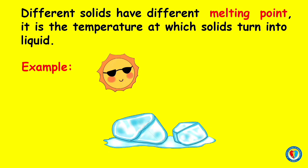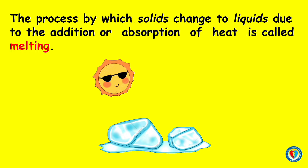Different solids have different melting points. The melting point is the temperature at which solids turn into liquids. For example, when ice is placed under the sun, it will absorb radiant energy and start to become liquid. The process by which solids change to liquids due to the addition or absorption of heat is called melting.